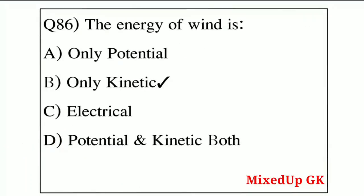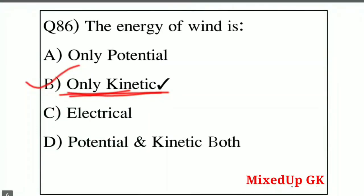The energy of wind is — Option A: only potential, Option B: only kinetic, Option C: electrical, Option D: potential and kinetic both. The correct answer is Option B — only kinetic. Wind energy is due to the motion of air, so it is only kinetic energy.